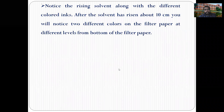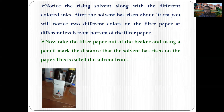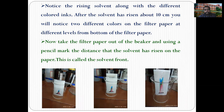On the filter paper, we will notice the rising solvent carrying different colorings. After the solvent has risen about 10 centimeters, you will notice two different colors on the filter paper at different levels from the bottom. Take the filter paper out of the beaker and use a pencil to mark the distance the solvent has risen — this is called the solvent front. The separation of pigments can be observed on the filter paper as the chromatogram develops step by step.